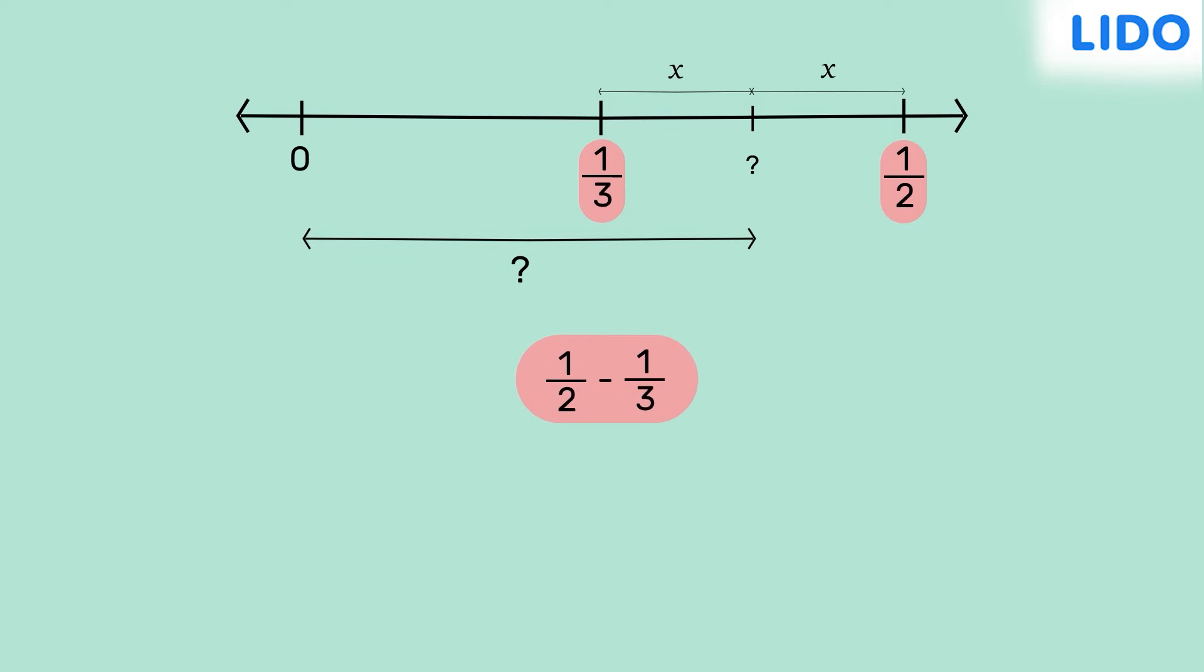Since the rational number we're looking for is exactly halfway between 1 third and half, let's divide this distance by 2. What we get is half minus 1 third the whole divided by 2. But this represents the number's distance from 1 third.